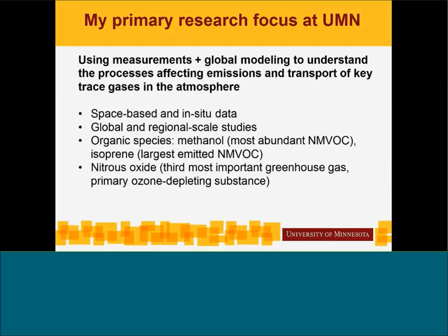I work on organic species, primarily methanol, which is the most abundant non-methane volatile organic species in the atmosphere. I'll also be starting a new project on isoprene, which has the largest emissions of any non-methane volatile organic species. Both of these come primarily from terrestrial plants, and they're precursors to atmospheric species such as formaldehyde and ozone — important in terms of air quality.